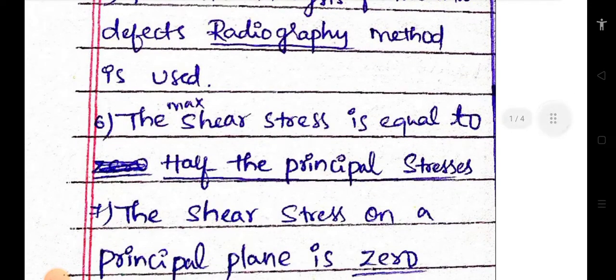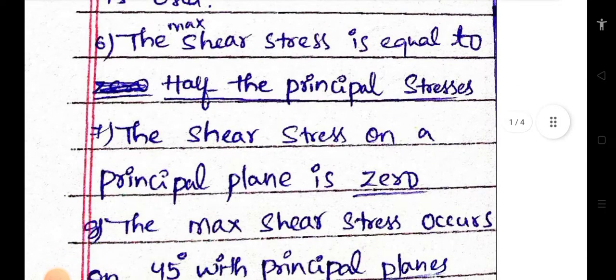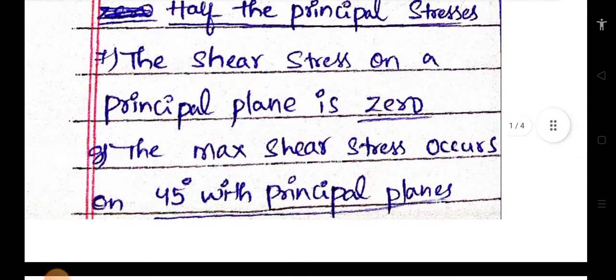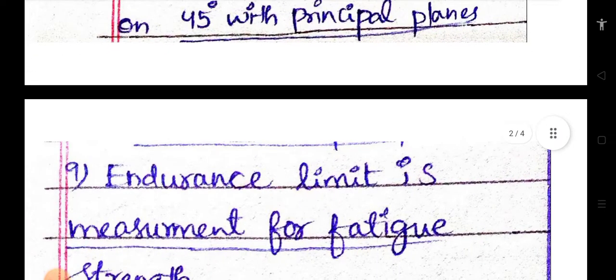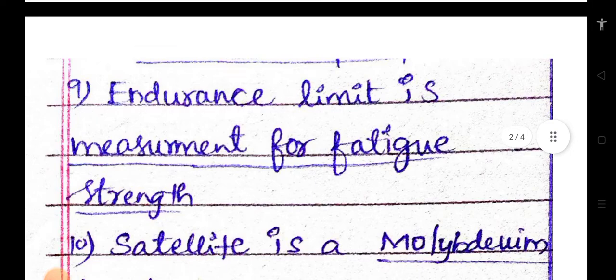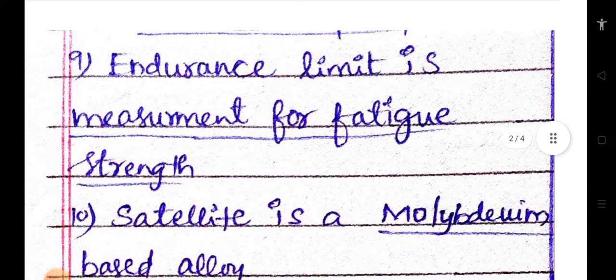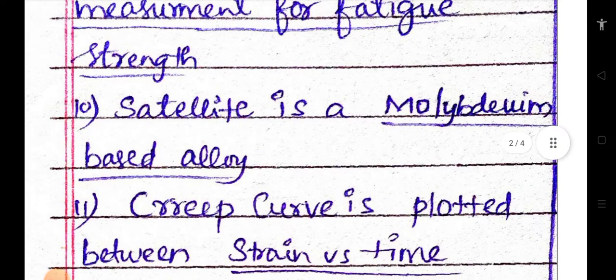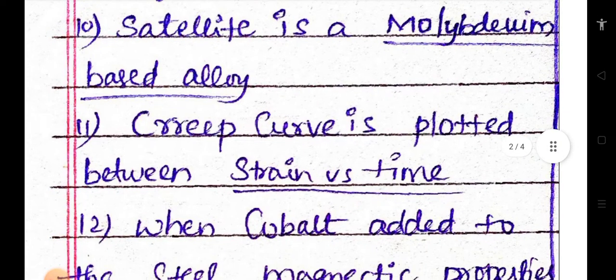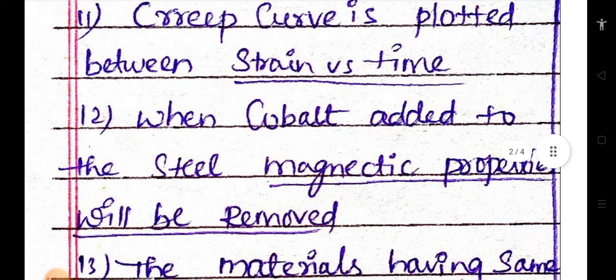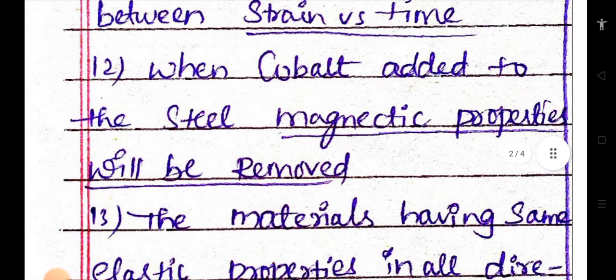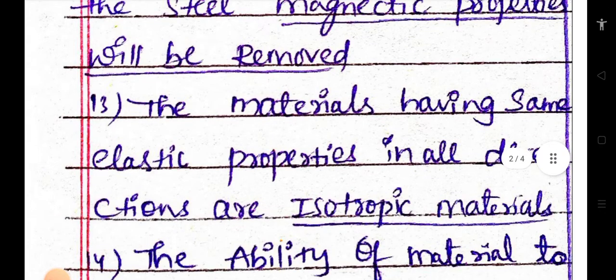The max shear stress is equals to half the principal stresses. The shear stress on a principal plane is zero. The maximum shear stress occurs on a 45 degrees with principal planes. Endurance limit is measurement for fatigue strength. Stellite is a morphine based alloy. Creep curve is plotted between strain versus time.